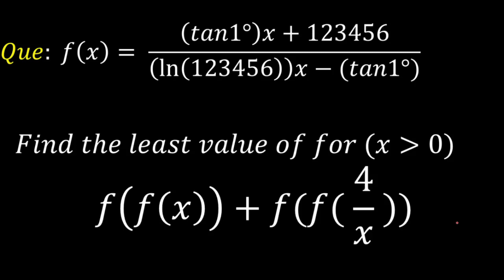Hello everyone. Today we are going to look at a problem from functions. The function f(x) is given as tan(1°)·x + 123456, whole divided by log(123456)·x minus tan(1°). Our objective is to find the least value of the composite function f(f(x)) plus f(f(4/x)), for x greater than 0.